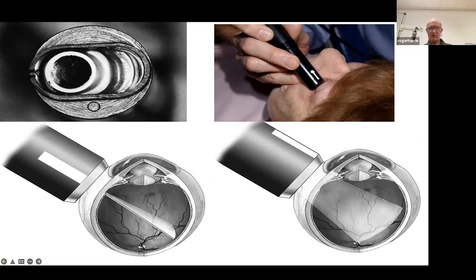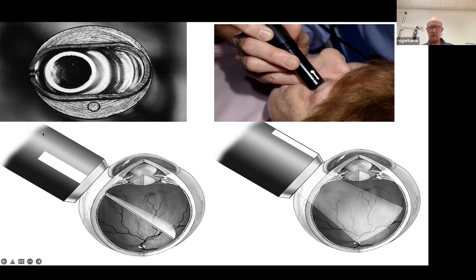This is a transducer here with the head removed, and this shows the actual transducer that generates the ultrasound. There's a little very thin ceramic crystal — microscopically thin — that's stimulated by electric pulses to vibrate and generate sound waves at very high frequency. Our standard B-scan probe is an 8 to 10 megahertz probe, and that generates the sound.